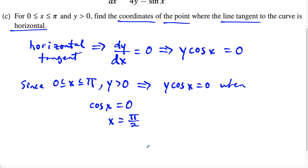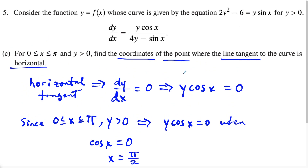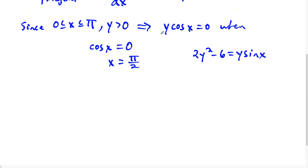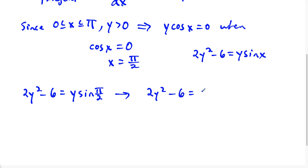To find the full coordinates, we go back to the original equation: two y squared minus six equals y sine x. Substituting x equals pi over two, sine of pi over two is one, so we get two y squared minus six equals y. Rearranging gives us two y squared minus y minus six equals zero. Using the AC method, AC equals two times negative six which is negative 12, and the B term is negative one. We need two numbers with product negative 12 and sum negative one: those are negative four and three.